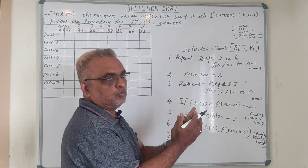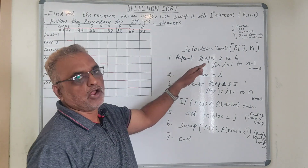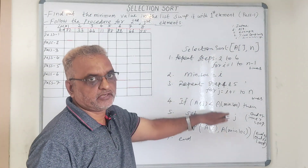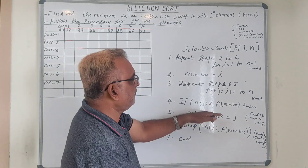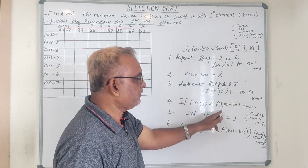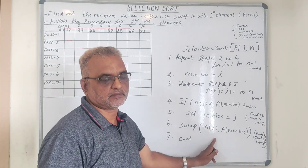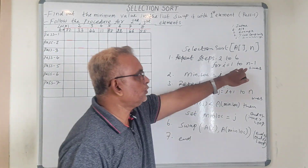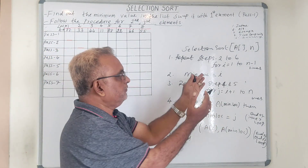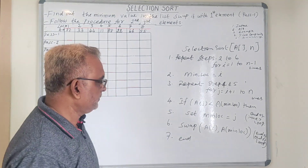The inner loop finds the minimum value in the list, and that value replaces element 1. Similarly, when i equals 2, we find the minimum value and swap it with the second element, and so on for the third, up to n minus 1 elements. If we have n elements, we need to perform only n minus 1 passes, because the last element will already be sorted.